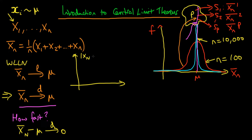If I draw a graph of the modulus of x̄ₙ − μ against n — since x̄ₙ can be either above or below μ and we're interested in how far it is from μ, not which direction — then it turns out it looks something like this, where the functional form of the graph is given by 1/n^(1/2). What does it mean to converge at a rate of 1/n^(1/2)? It means that if I increase my sample size by a factor of 100, the deviations of x̄ₙ from μ go down on average by a factor of 10, because 100^(1/2) = 10.